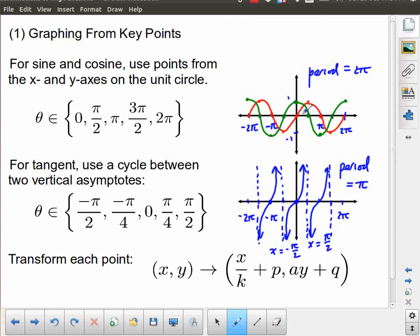Once I can identify some of these key points, then the next thing I need to do is to transform those points according to my values for a, k, p, and q. And the easiest way to do that is with this relation. X, y turns into x over k plus p, a y plus q.